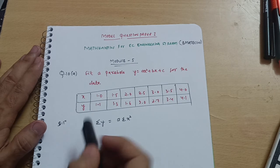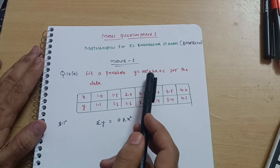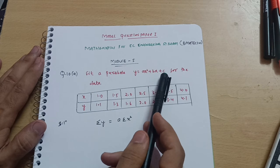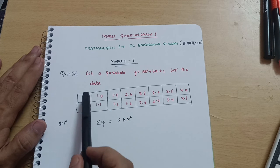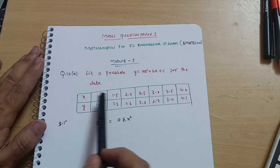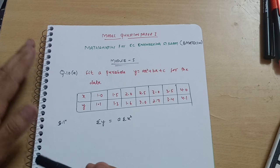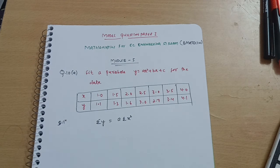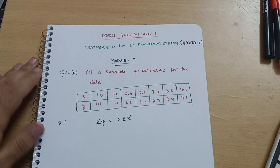Question number 10a: fit a parabola y = ax² + bx + c for the data given. x and y are given as 1.0, 1.5, 2.0. This is model question paper set 1, question number 10a. Let us solve it.